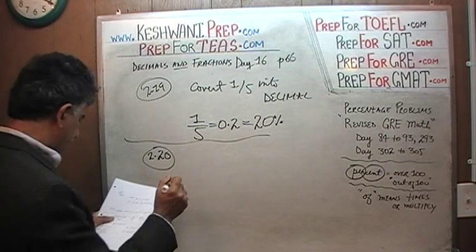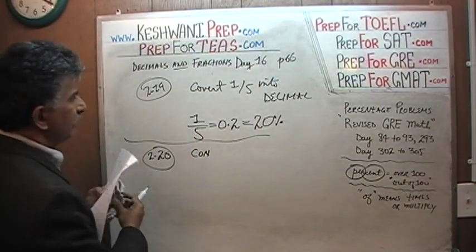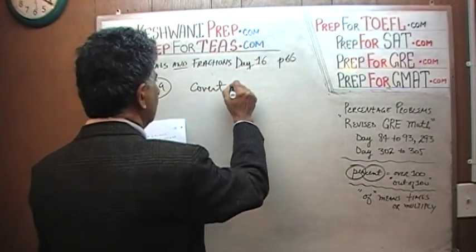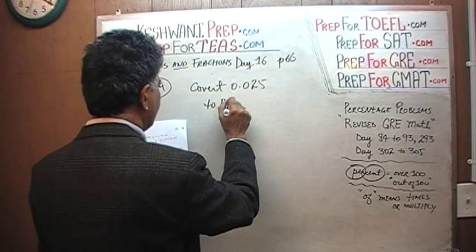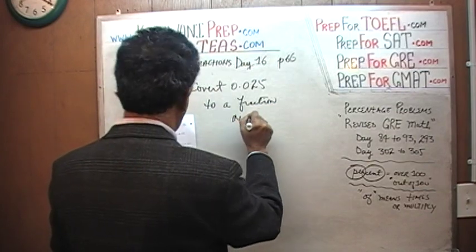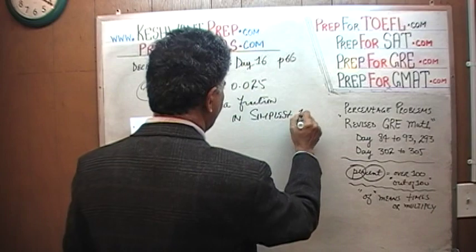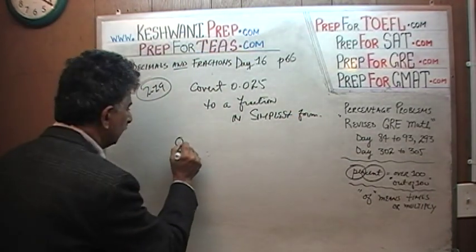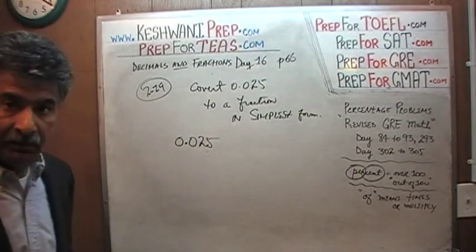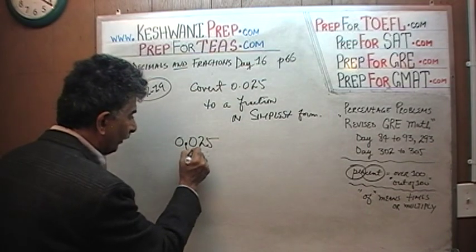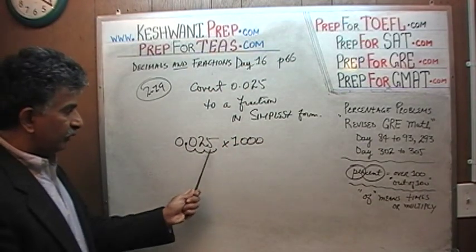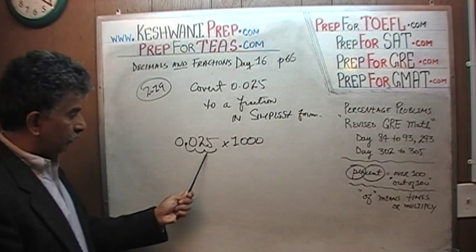Number 20 says: convert 0.025 to a fraction in simplest form. To convert this into a fraction, we need to get rid of the decimal. This decimal has three places — 1, 2, 3. So if we multiply by 1,000, the decimal shifts three places and we end up with 25.